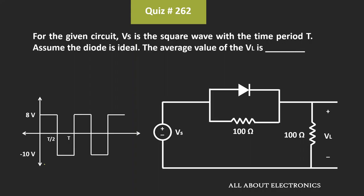Hey friends, welcome to the YouTube channel All About Electronics. In this question, we have been given this circuit, and to this circuit, this square wave is applied as an input. We have been asked to find the average value of the output voltage. Here, this diode is the ideal diode.